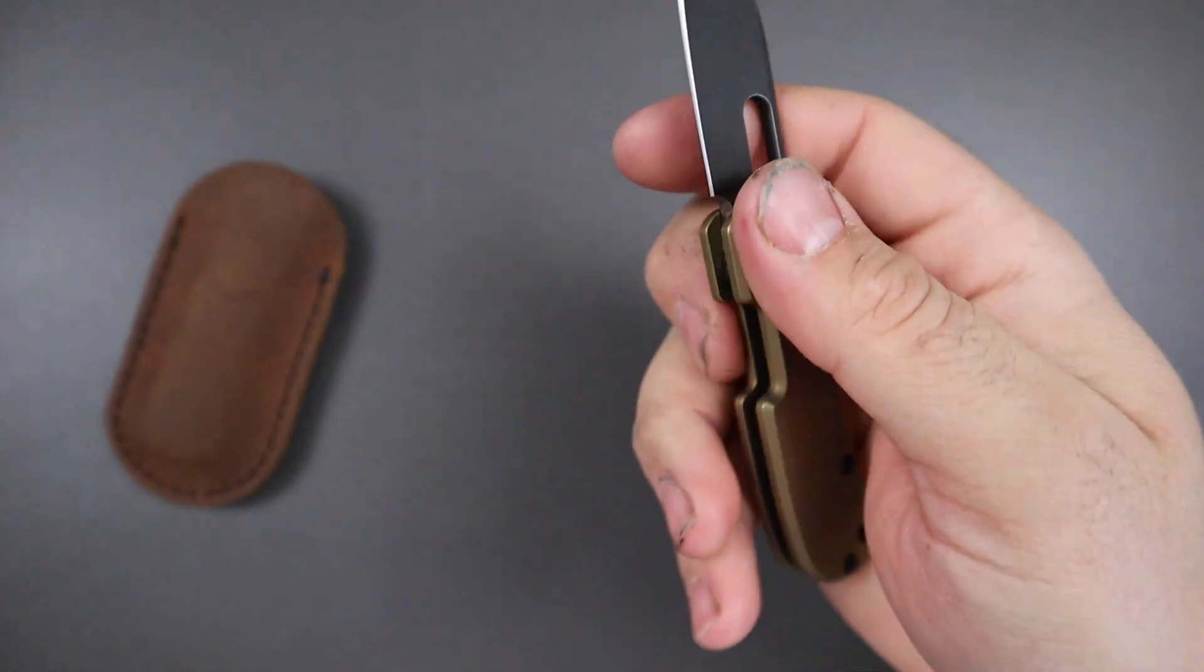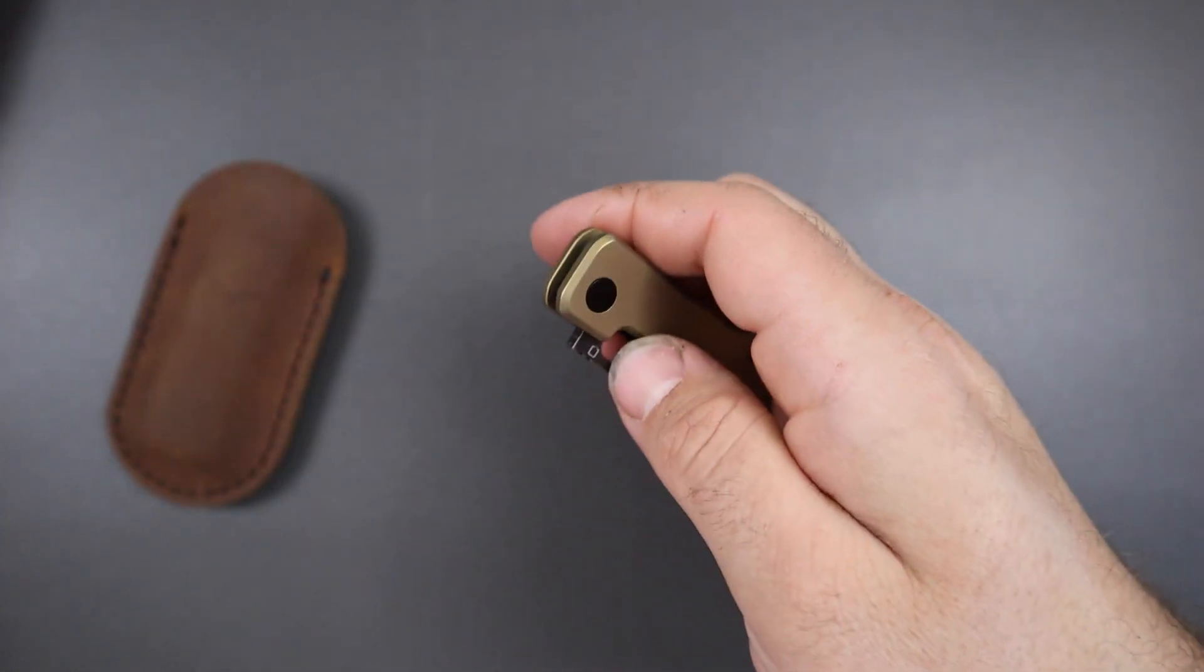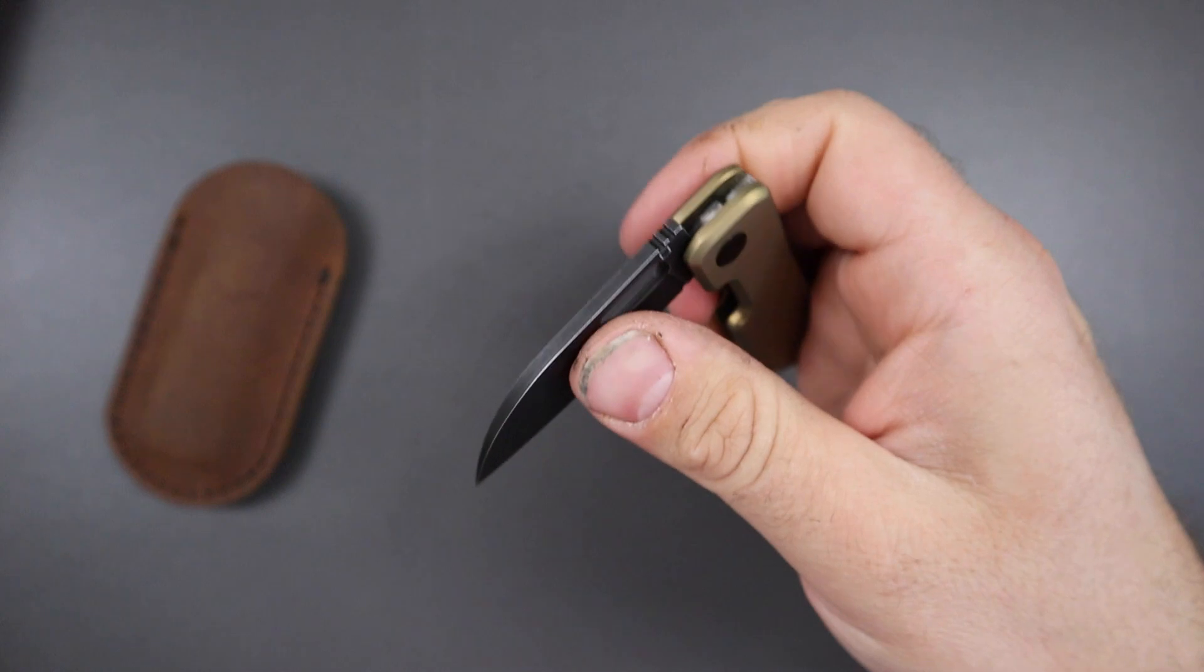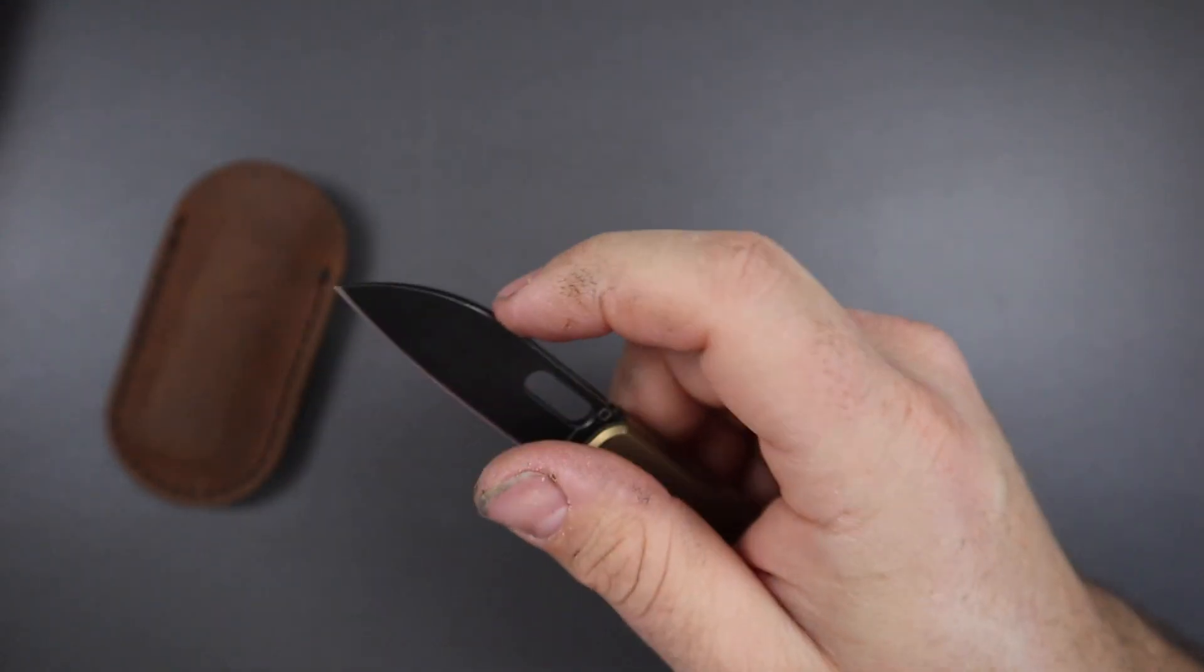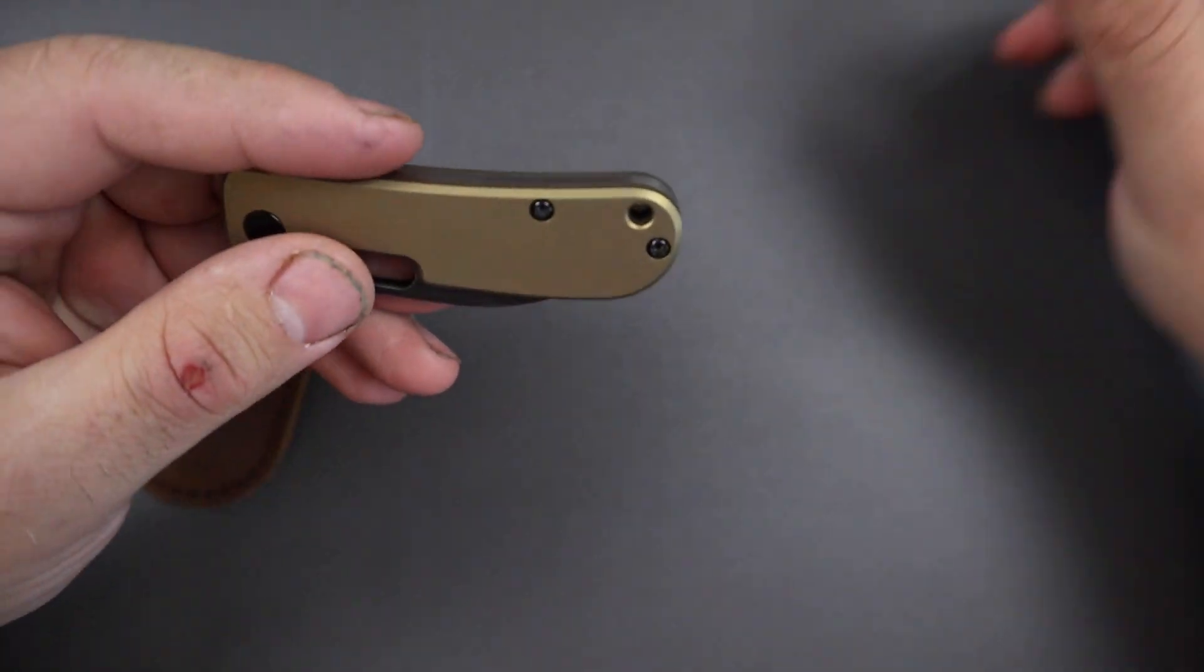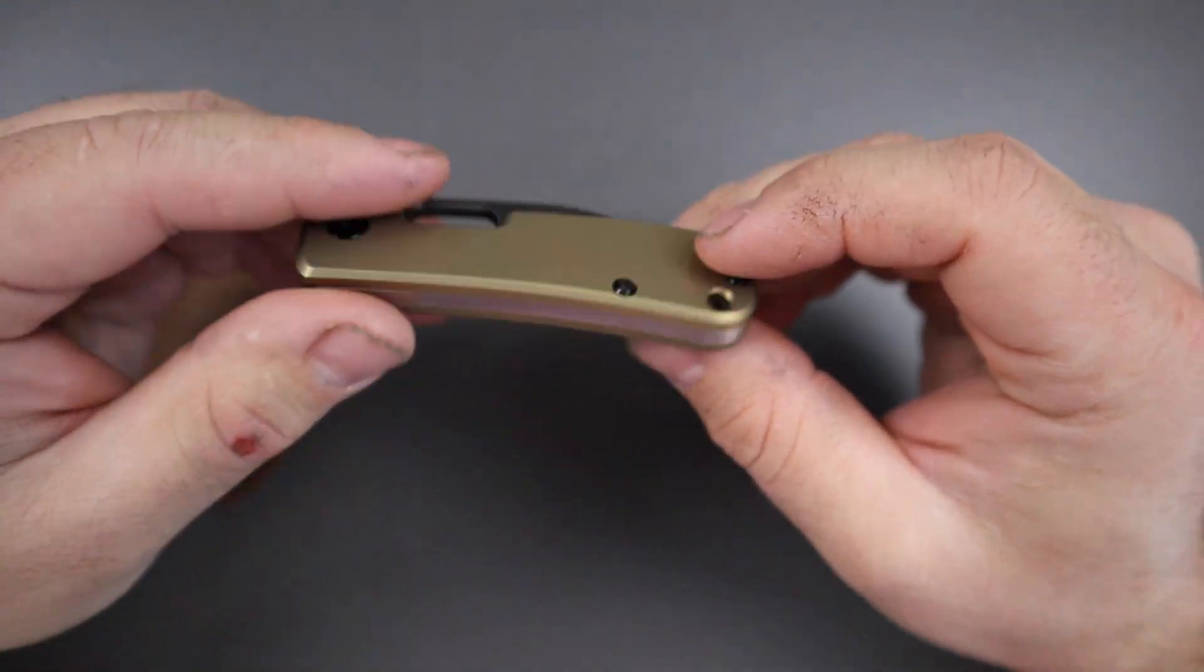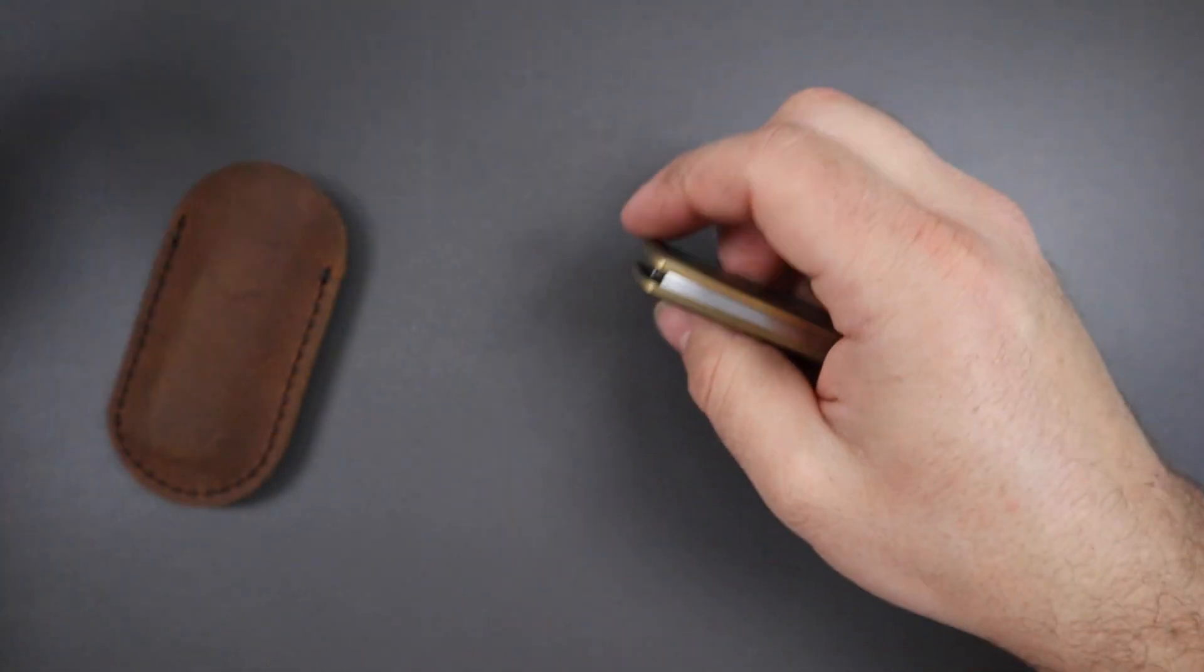Yeah, so there's not a lot of one-handed operation slip joints out there, but yeah this is one. Pretty cool, so a neat little thing about that. I kind of had to fight the urge to try to reverse flick it. It's not going to work by the way.